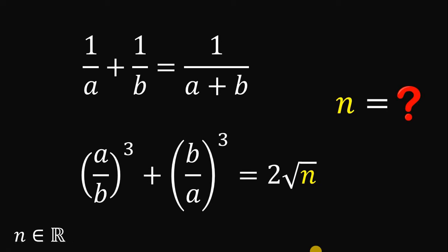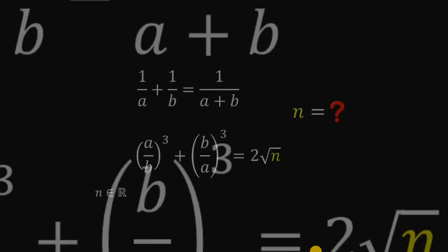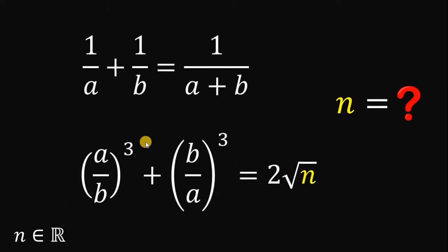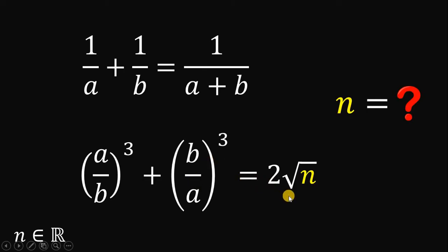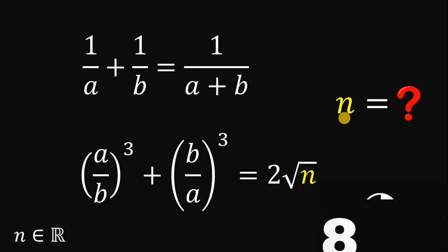Good day everyone, here's our math challenge for today. Here's our question: given that 1 over a plus 1 over b equals 1 over (a plus b), and a over b cubed plus b over a cubed equals 2 times the square root of n, the question is: what is the value of n? You can pause this video if you want to give this problem a try.